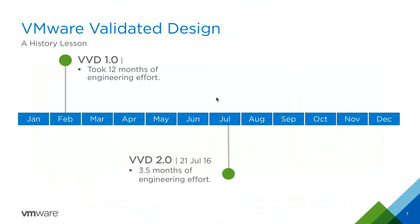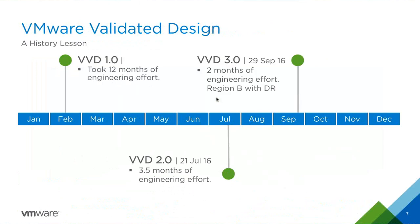Then they started working on the next release. In July of last year they released VVD for SDDC 2.0 — about three and a half months of engineering effort. At this release they made it really public, right before VMworld last year. Some pieces were scoped down to get it out before VMworld, releasing in late July of 2016.